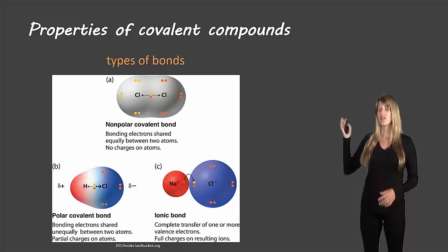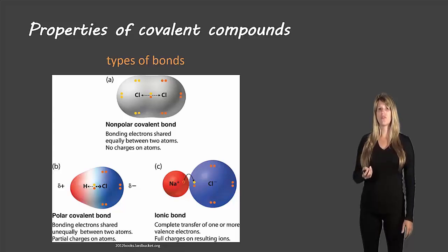We have the nonpolar covalent compounds at the top. Nonpolar covalent compounds happen when two elements share their electrons and that brings them together. That sharing is equal, so each of the electrons being shared is equally shared between the two different atoms.